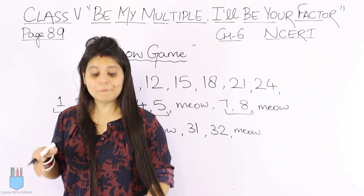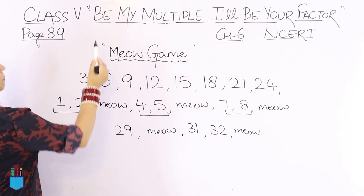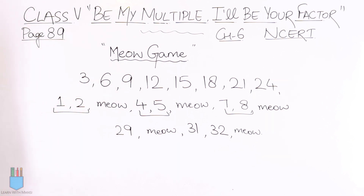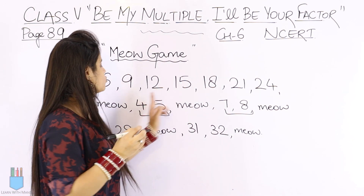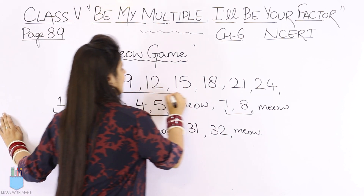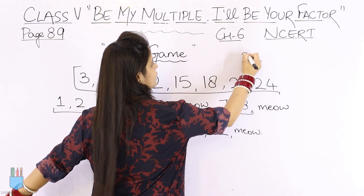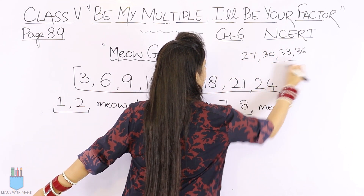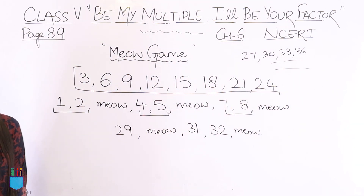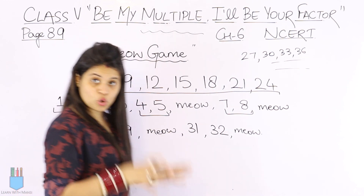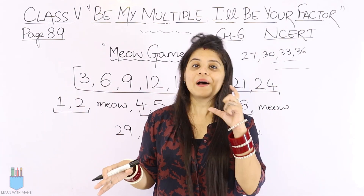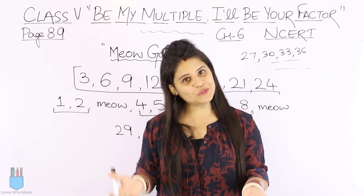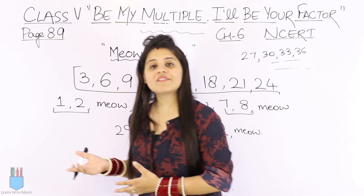We say these numbers are the multiples of three. Our chapter name is 'Be My Multiple', so this word is multiple. These numbers we have written here — 3, 6, 9, 12, 15, 18, 21, 24, 27, 30, 33, 36 and so on — these are multiples of three. Similarly, the number 2 will be divided by multiples of two, and the number 4 will be divided by multiples of four.